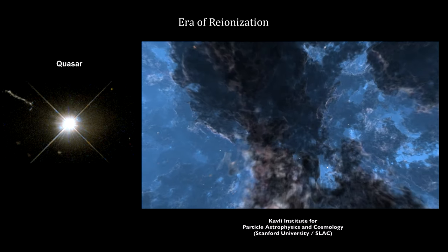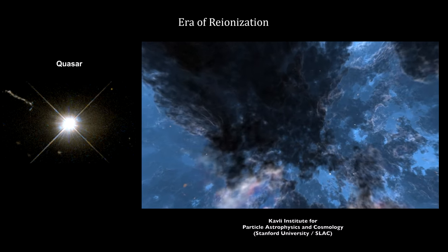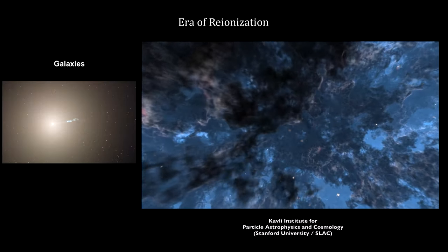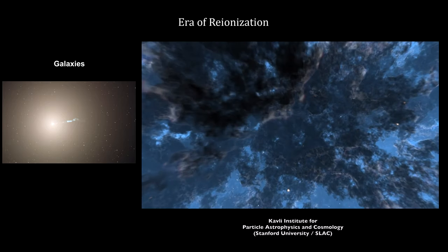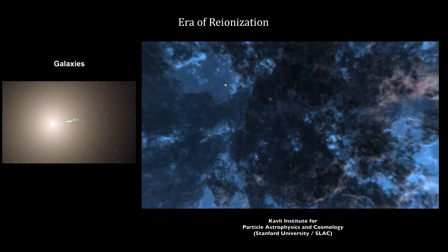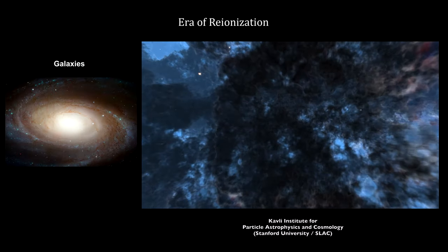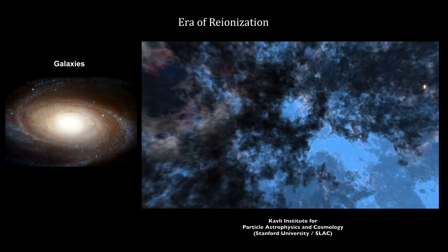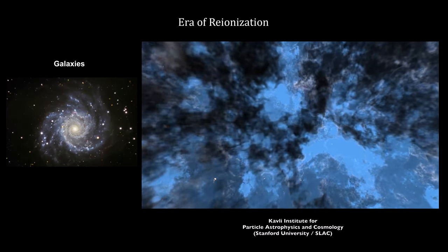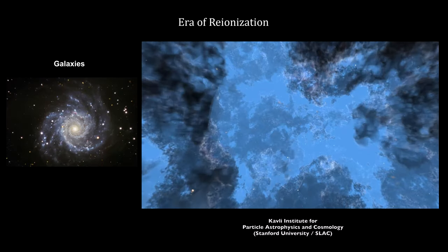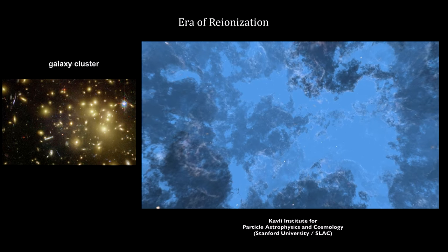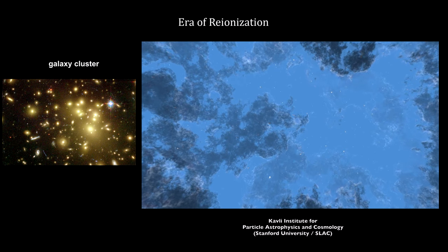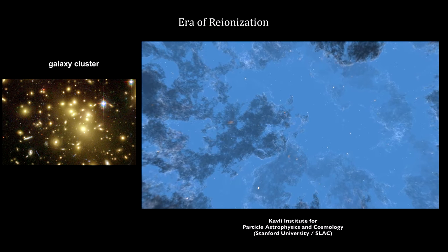In this simulation, the dark regions are filled with hydrogen atoms. The light areas have been ionized, and light can travel through them with minimal losses. Over time, the ionized regions around stars cleared entire galaxies, and ionized regions around galaxies cleared entire galaxy clusters. This process ended around 1.1 billion years after the Big Bang, with all of space cleared for light travel.